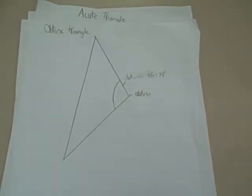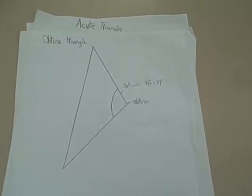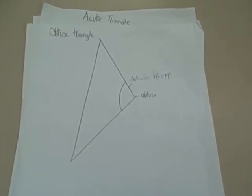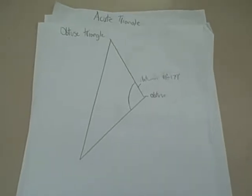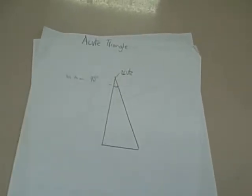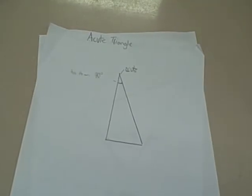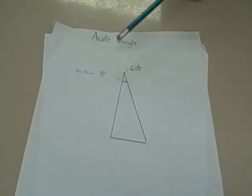On an obtuse triangle, there's going to be at least one angle that will be more than 91 degrees and 179. Acute triangles, all sides are less than 90 degrees.